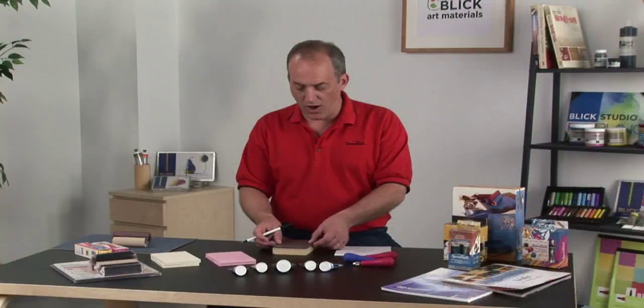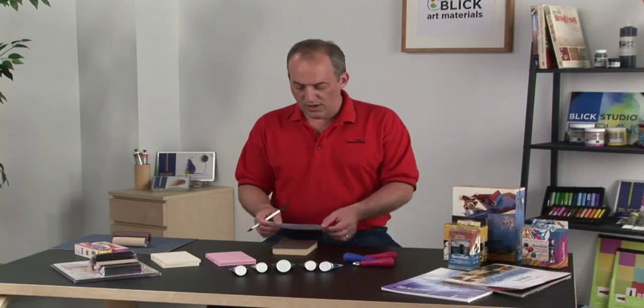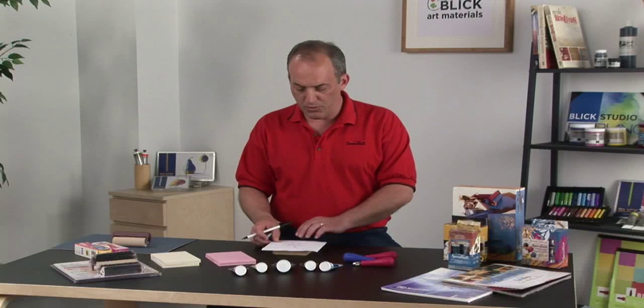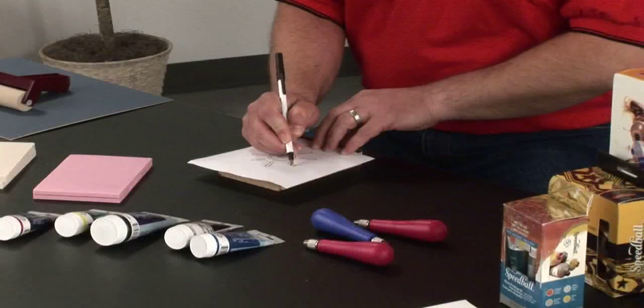Simply lay the graphite paper onto the block, and then the image over the top of it, and with a ballpoint pen, trace around the image itself.